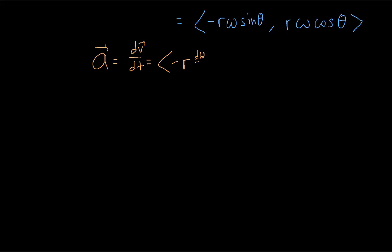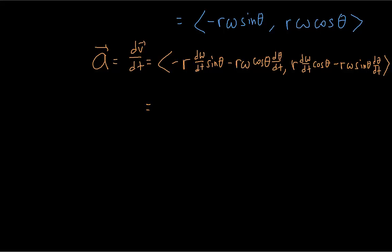We're going to need to use the product rule to do this. Each of the components of the velocity vector is going to separate into two terms by the product rule, so it's becoming a bit messy. Notice that we have the derivative of ω in both of these terms, so we're going to rename it to α (alpha), which is the angular acceleration — the rate of change of the angular velocity.